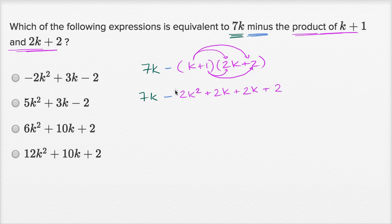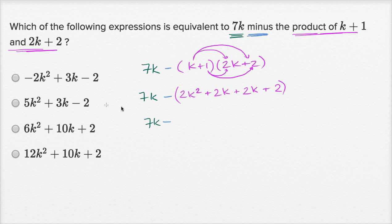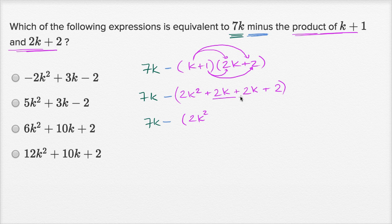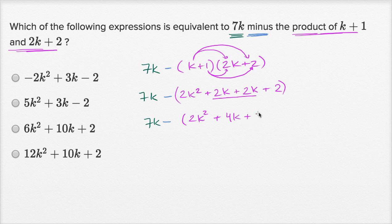We want to be careful and put a parenthesis out front because we're going to subtract all of this. So this is going to be 7k minus, and then in parenthesis, we have 2k squared. We can add 2k plus 2k to get 4k, plus two.